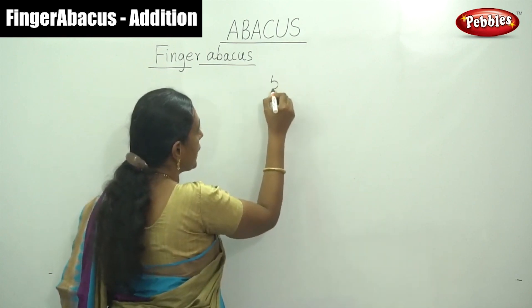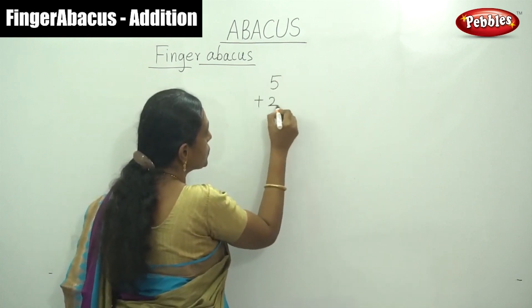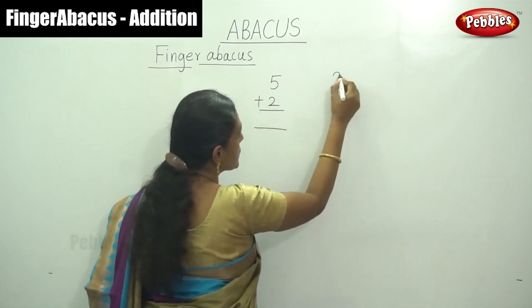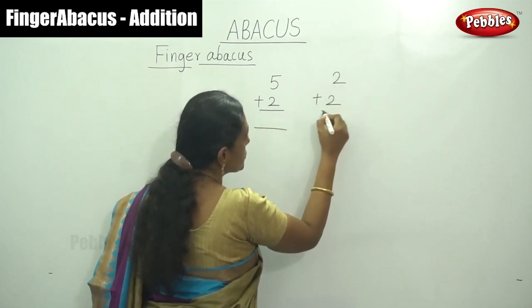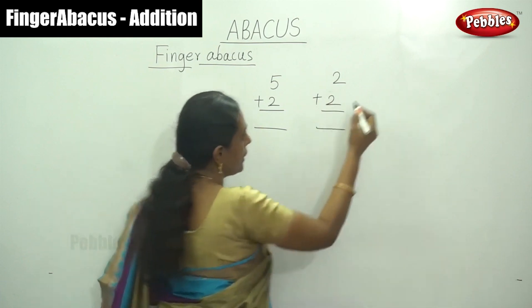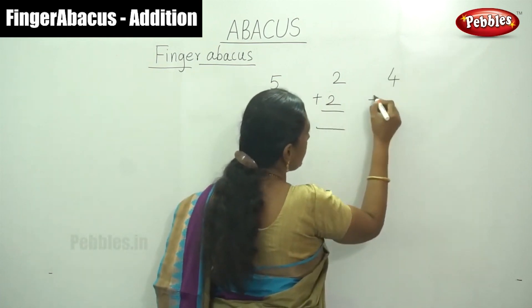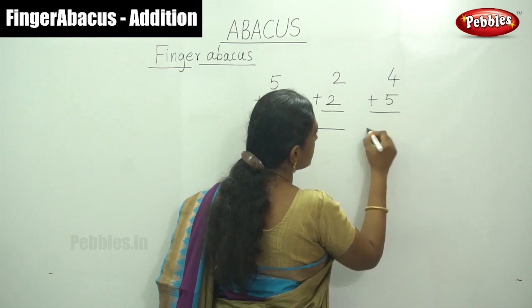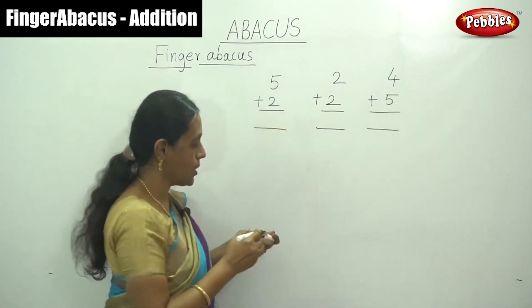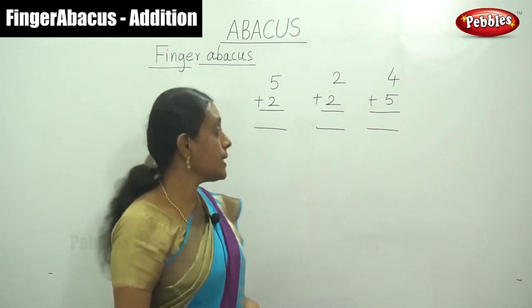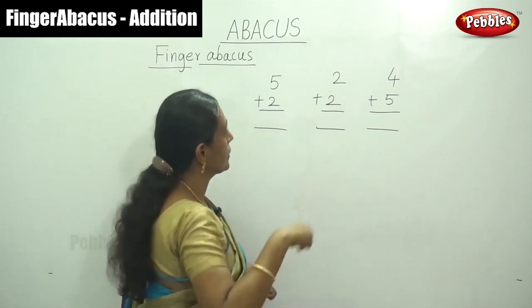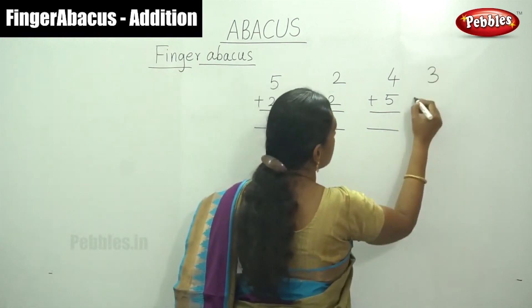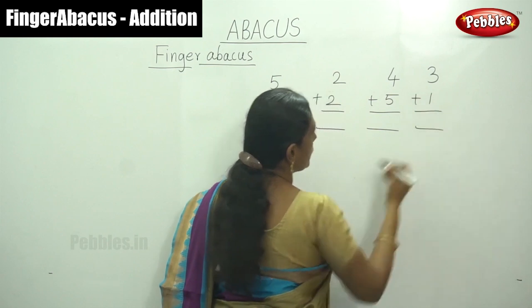That is 5 plus 2, and that is 2 plus 2, and 4 plus 5. So this is our simple addition, single digit addition. That is 3 plus 1.